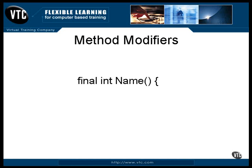A final method is one that cannot be changed in a subclass. Normally, a subclass can override a method with a method of its own of the same name, but a final method cannot be overridden.